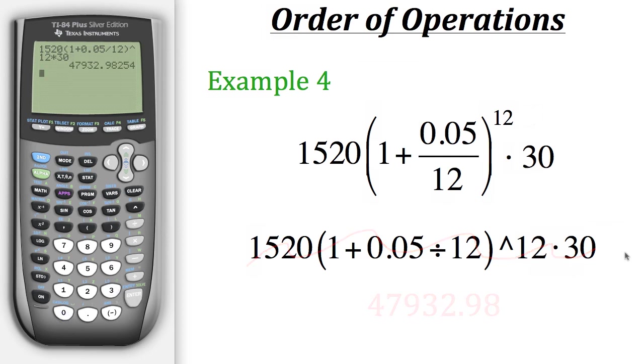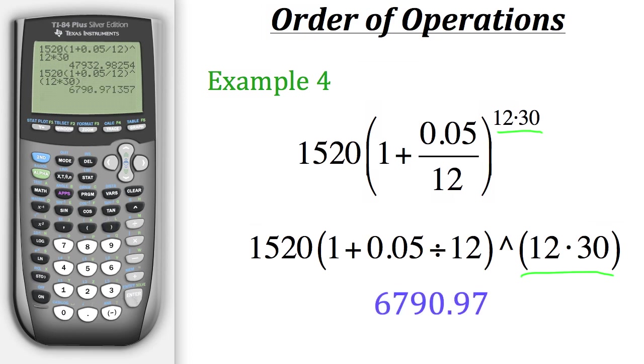So this approach doesn't work. So rather than keeping the 12 and the 30 separate, let's keep them together in the exponent, just like with our example 4. The 12 times 30 need to be together, so when we input that into our calculator, we need to find a way to keep the 12 times 30 together in the exponent. So to do that, we could put them in parentheses. So now when we put it in our calculator, it will keep the 12 times 30 together in the exponent, giving us the correct answer.